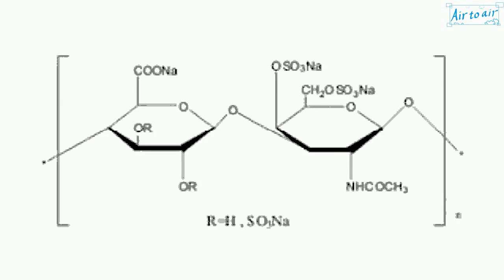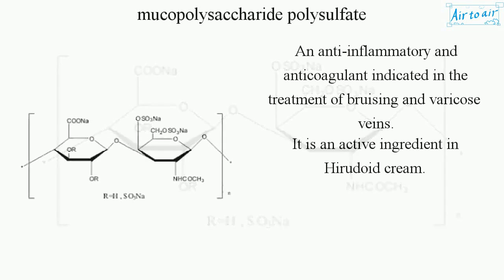Mucopolysaccharide polysulfate – an anti-inflammatory and anticoagulant indicated in the treatment of bruising and varicose veins. It is an active ingredient in Hirudoid cream.